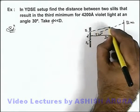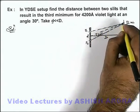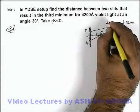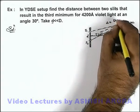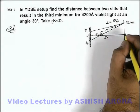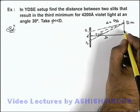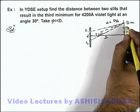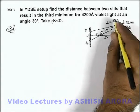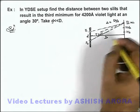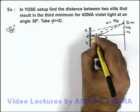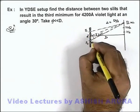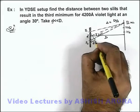That means the path difference between the 2 waves from slit sources S1 and S2 at this point will be equal to 5λ/2, because for the first minimum it is λ/2, for the second minimum it is 3λ/2, and at the third minimum it will be 5λ/2. And we know at an angle theta, with d very small compared to capital D, the path difference can be written as d·sinθ.